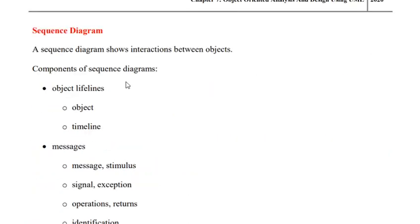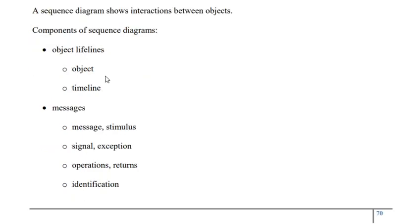Sequence diagram is one of the interaction diagrams we will go through. A sequence diagram shows the interaction between various objects in order to realize a particular objective or scenario. It represents all possible objects participating in the realization of a particular business process or scenario. The components of a sequence diagram are object lifeline and messages. Object lifeline basically refers to the span of time for which the object will be participating in the realization of the scenario — it has an object and a timeline.